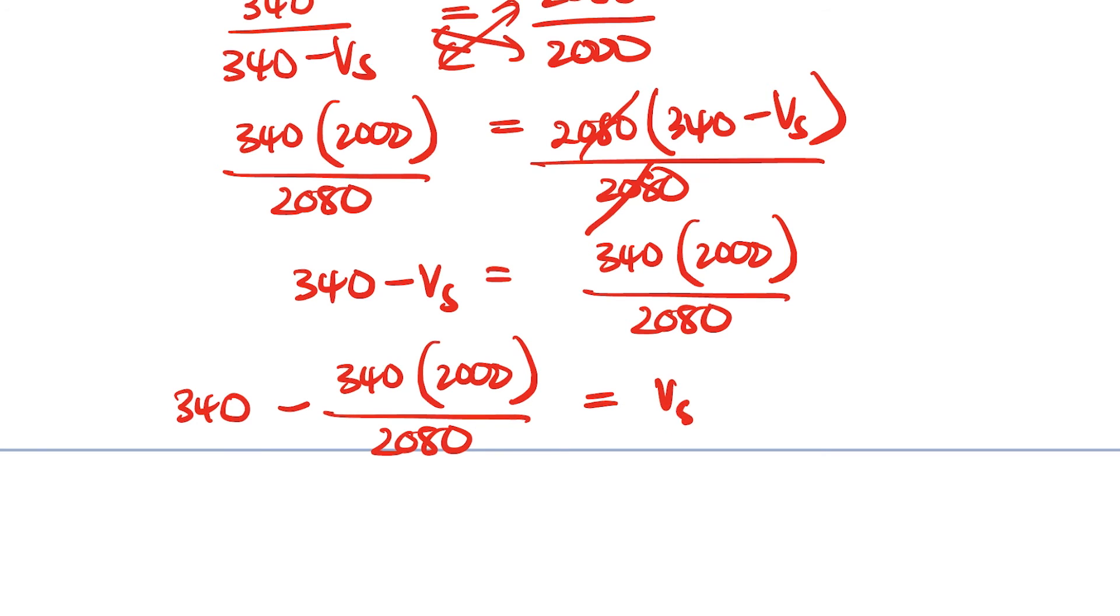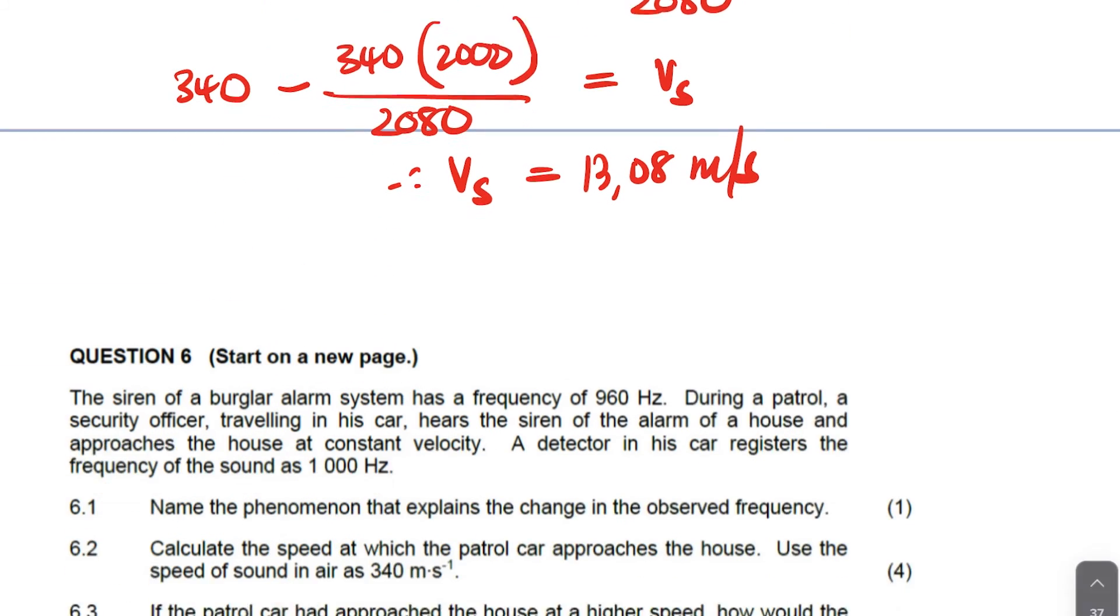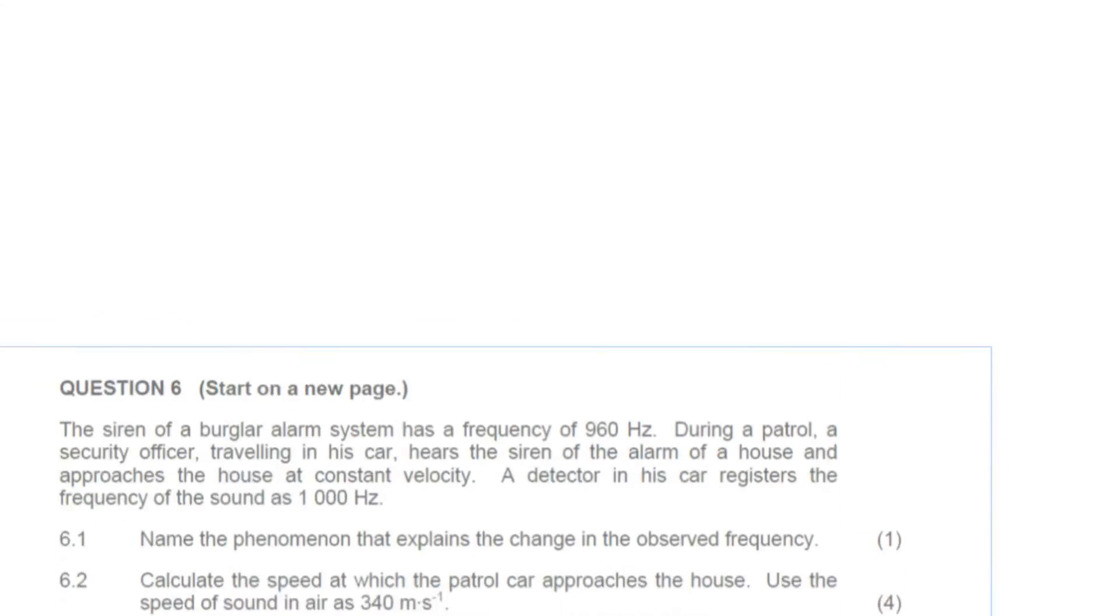So we'll have Vs there and therefore our Vs is equal to, so if I punch the entire thing in the calculator, so it will be 340 minus 340 times 2,000 divided by 2,080. So the answer here, it's 13.08 meters per second. I just punched this entire thing in the calculator. And it helps guys to keep your answers like this, not to round off while you are not done with your final answer.